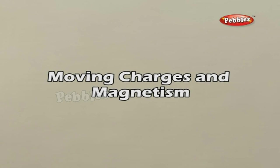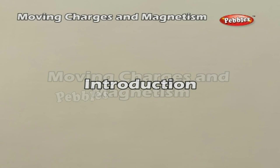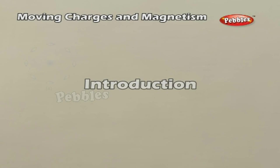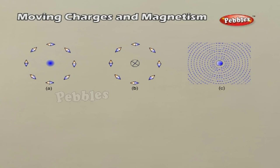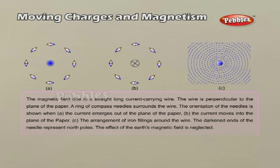Moving Charges in Magnetism. The branch of physics which deals with magnetism due to electric current is called electromagnetism. For a long time it was hard to believe that there existed a relation between electricity and magnetism. Hans Christian Oersted observed that a pivoted magnet was deflected when kept in the neighbourhood of a wire carrying current.